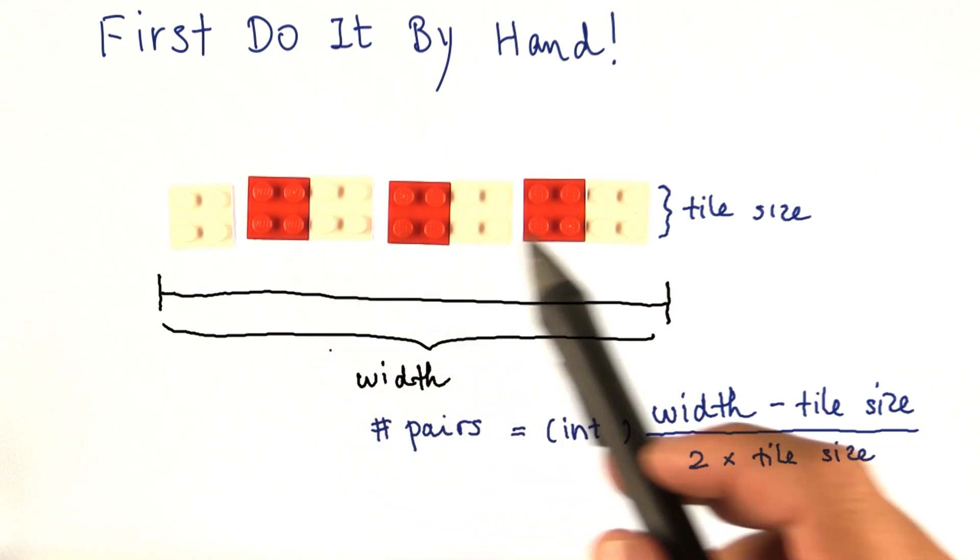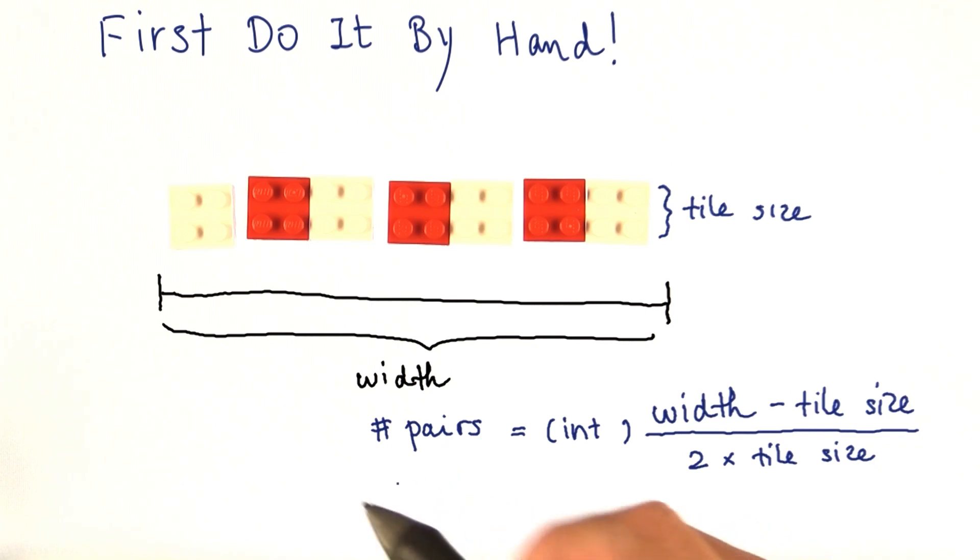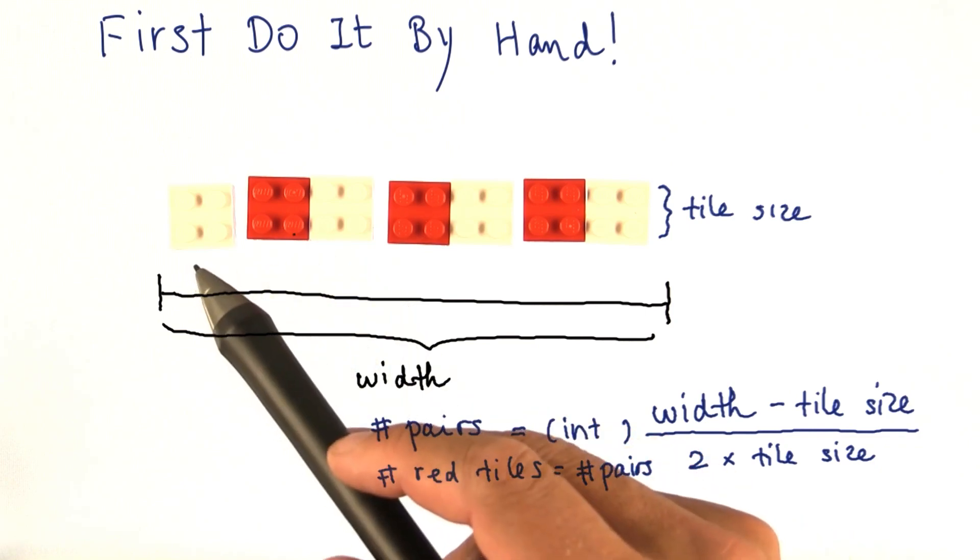Now that's of course the same as the number of red tiles, because every pair has one red tile. And the white tiles, there's one more.